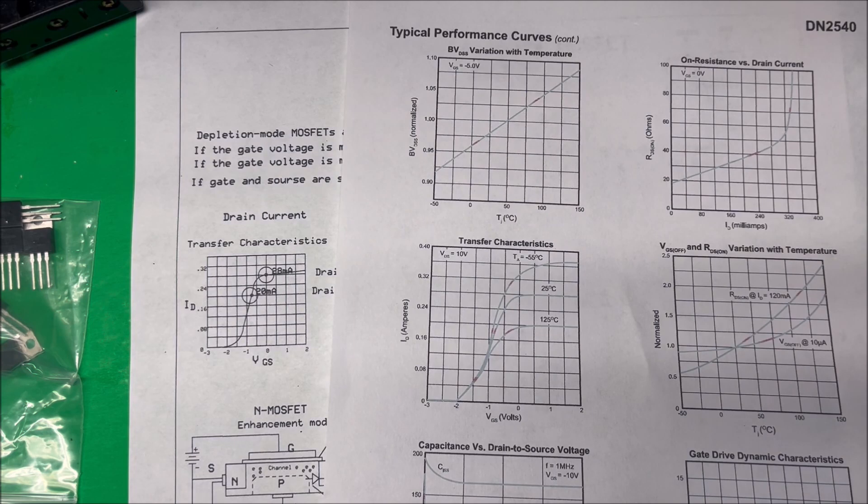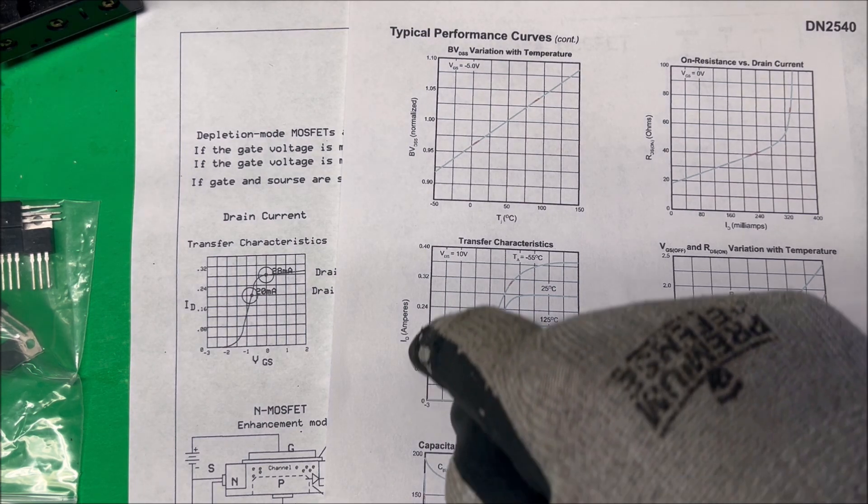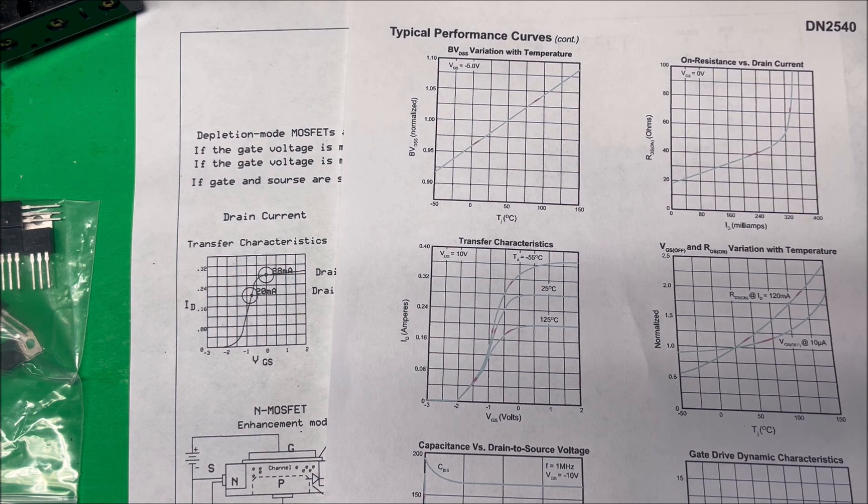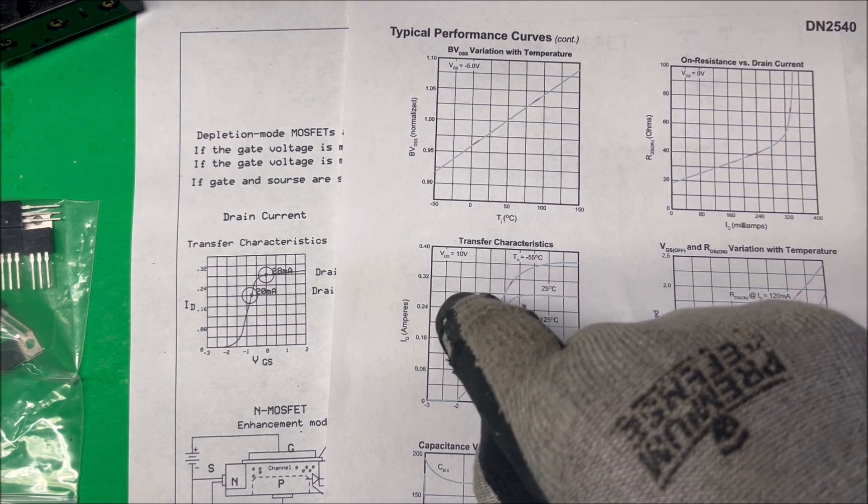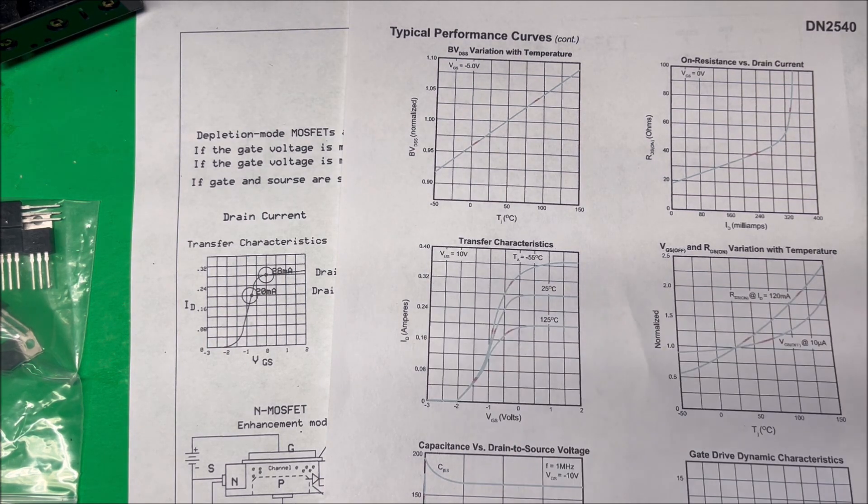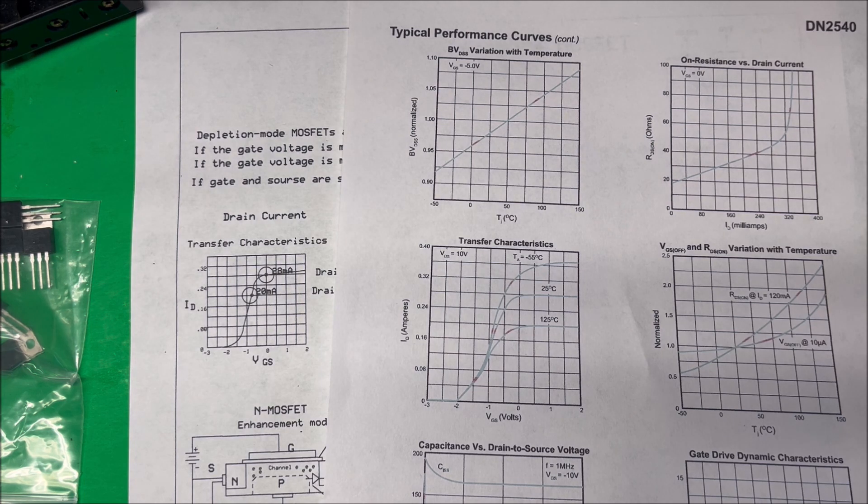What you want to do is look at this transfer characteristics chart. The bottom is the gate to source voltage, and here's our amperage on this side, our drain current. So at zero, if we run up here at say 25 degrees, it's going to be about 0.228 amps or 28 milliamps.